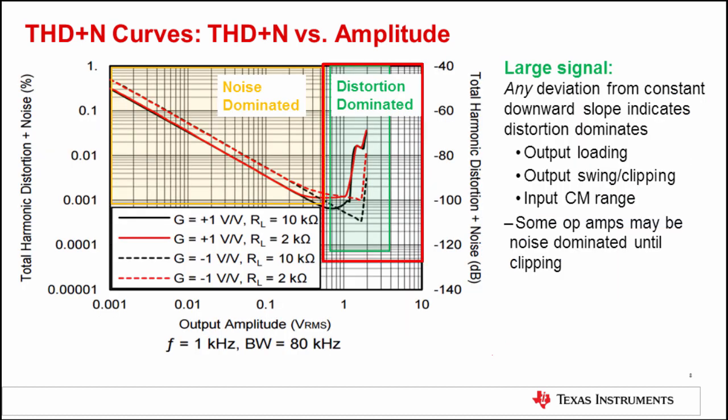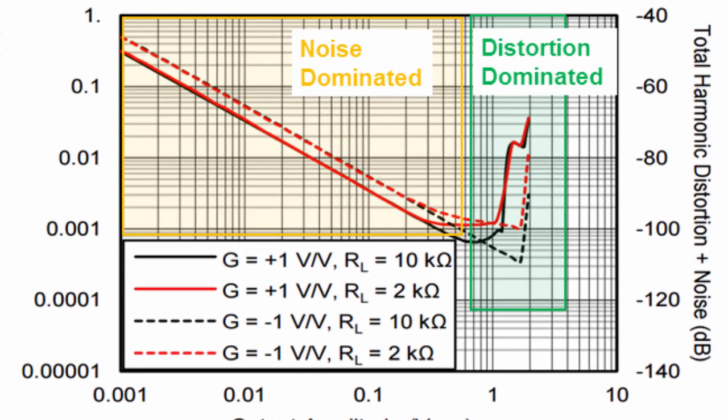Let's take a close look at the distortion region. In this region, the distortion harmonics are greater than the RMS noise voltage. Distortion harmonics can result from output loading, limitations in the output swing, or input common mode range violations. By inspection, we can tell that the slight increase in distortion is likely due to output loading, and we notice that the 2 kiloohm curves increase before the 10 kiloohm curves. Also, in a gain of plus 1, the op-amp might run into an input common mode limitation. This is why the gain of plus 1 curves show a sharp increase in distortion, while the gain of minus 1 curves do not distort until a higher voltage. All of the curves increase sharply at 2 volts RMS, which is due to output clipping. Some op-amps might be entirely noise dominated until output clipping. Their curves would progress downward at a constant slope all the way until the output clips, where you would then see a sharp increase in distortion.